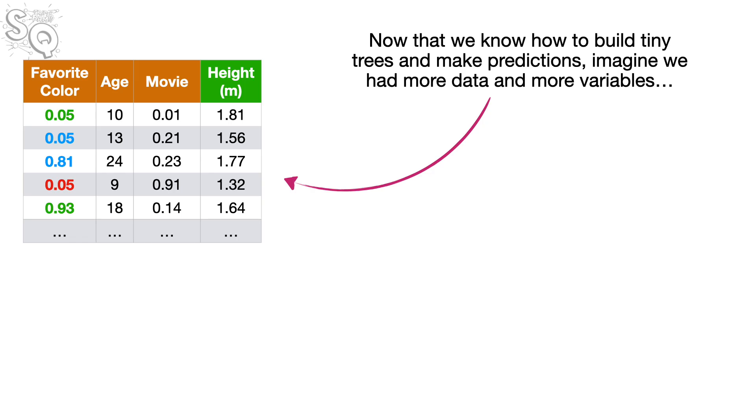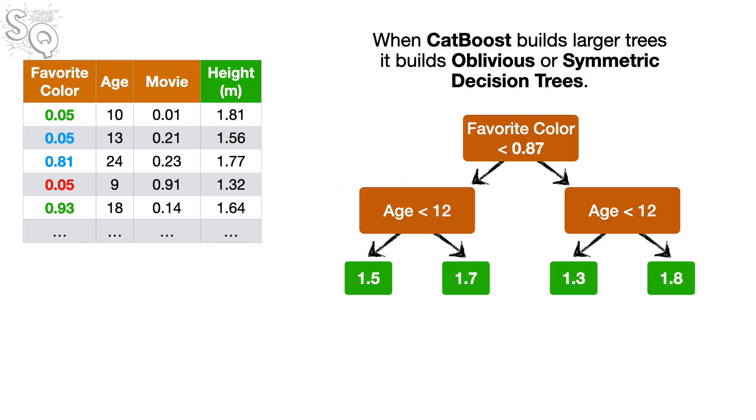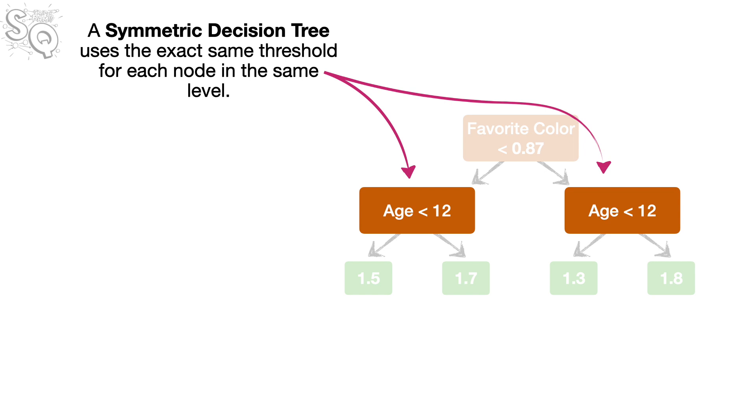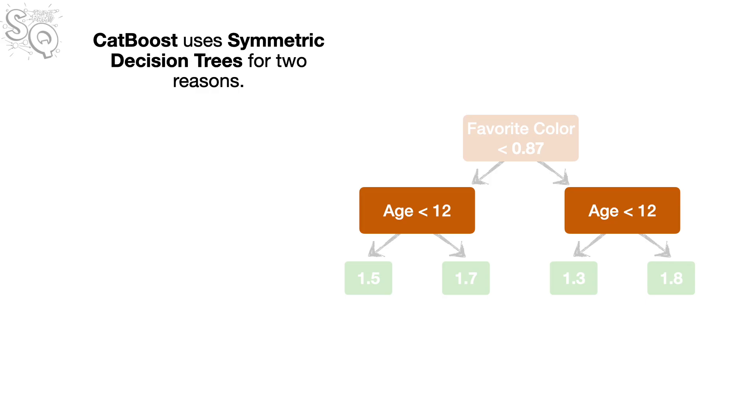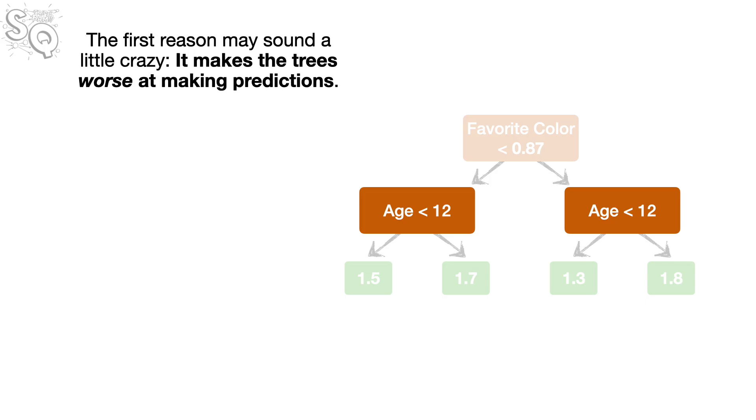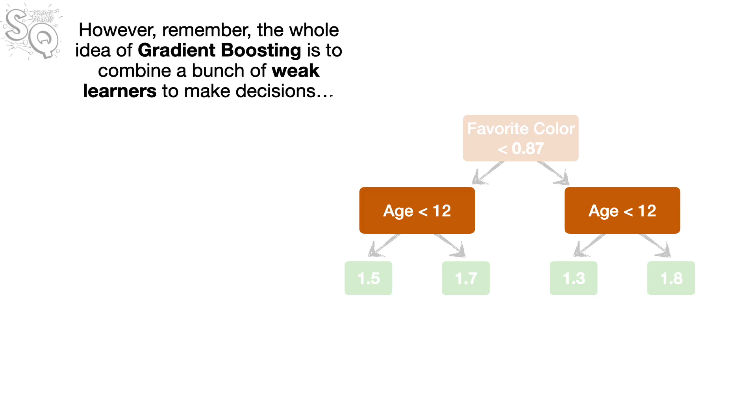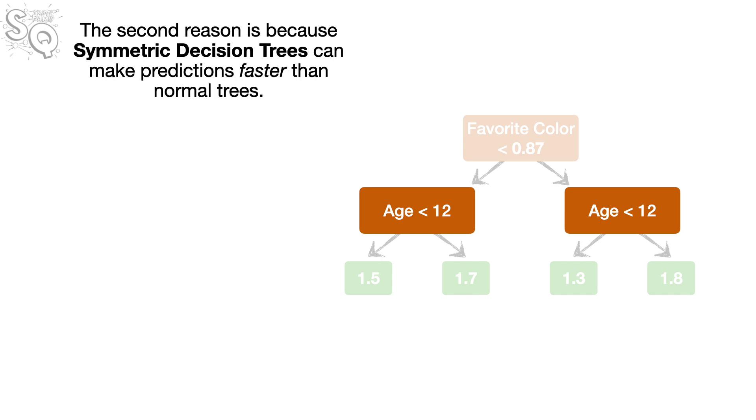Now that we know how to build tiny trees and make predictions, imagine we had more data and more variables, and we wanted to build a larger tree. When CatBoost builds larger trees, it builds oblivious or symmetric decision trees. A symmetric decision tree uses the exact same threshold for each node in the same level. In this example tree, that means that both nodes on the second level use the same threshold, age less than 12. CatBoost uses symmetric decision trees for two reasons. The first reason may sound a little crazy. It makes the trees worse at making predictions. However, remember, the whole idea of gradient boosting is to combine a bunch of weak learners to make decisions. And symmetric decision trees are just a weaker type of learner. Bam.